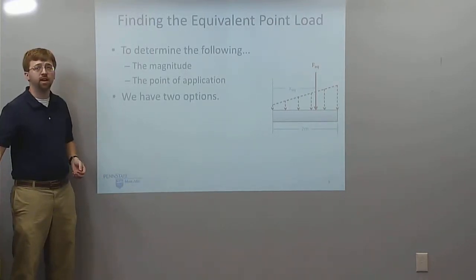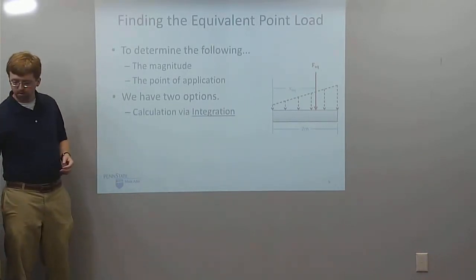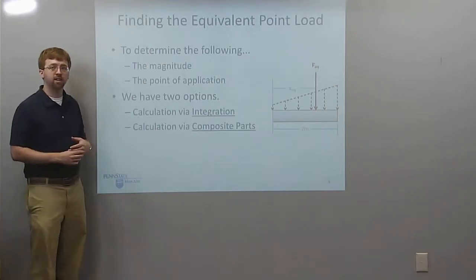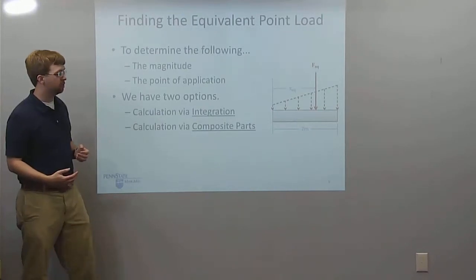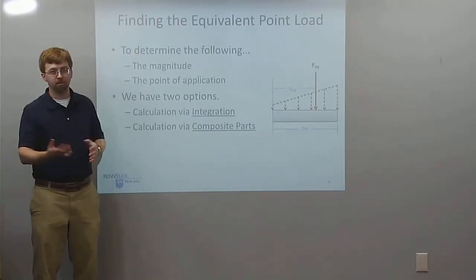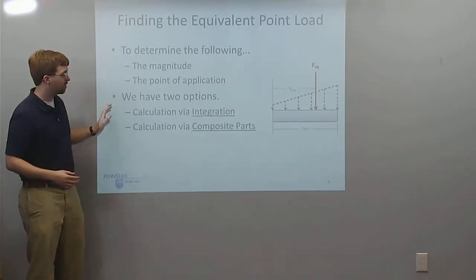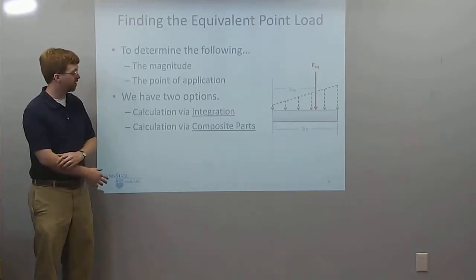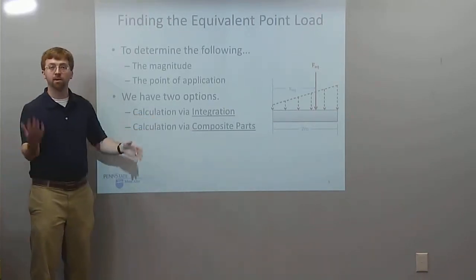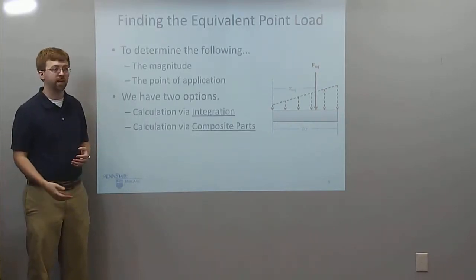We have two options to do this. We can calculate all of this via integration — a calculus-based approach — or we can calculate this via composite parts, which is more of a geometry-based approach. They both have their advantages and disadvantages. Calculus can find anything so long as you can find the equations, while composite parts tends to be easier since you can look up values in tables without doing all the calculus yourself.